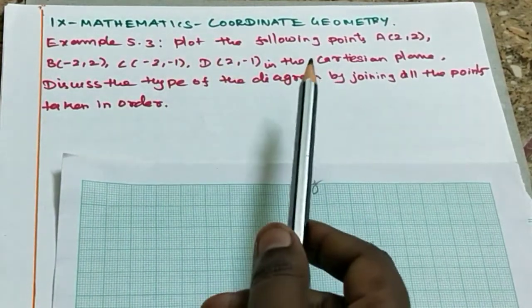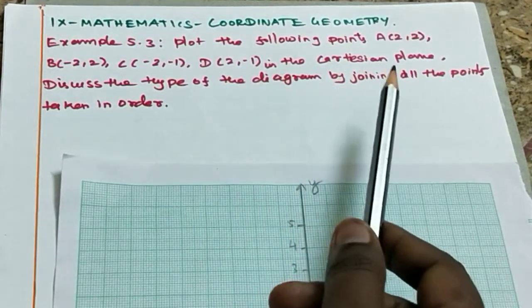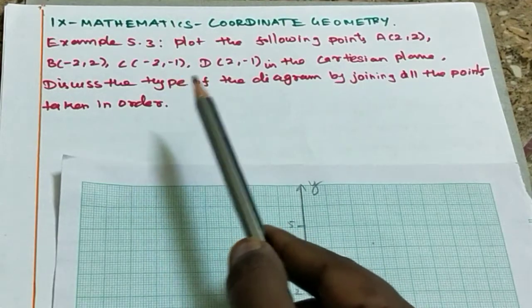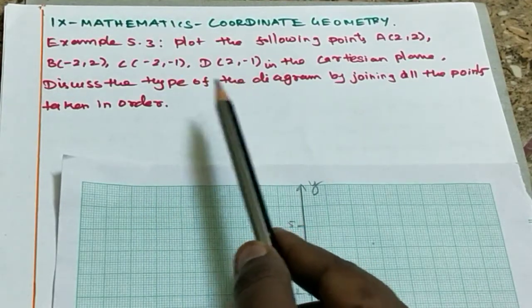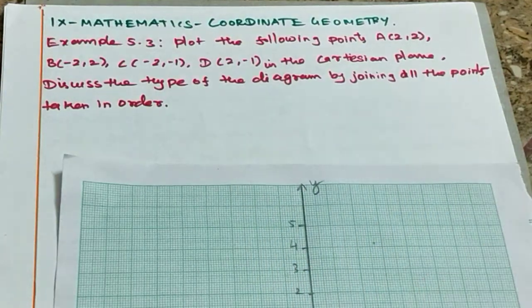Plot the following points A, B, C and D in the Cartesian plane. Discuss the type of diagram by joining all the points.